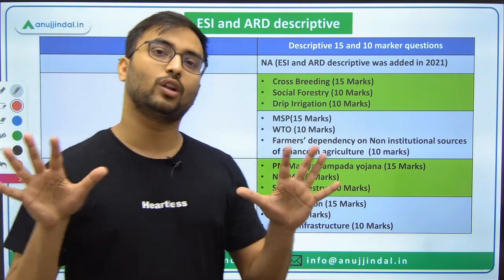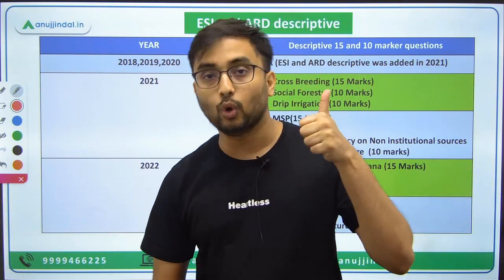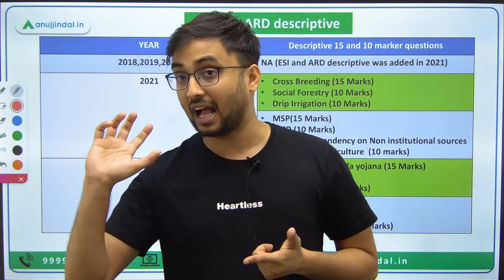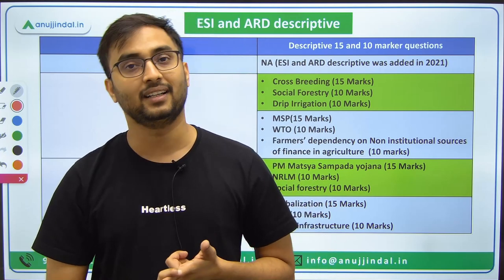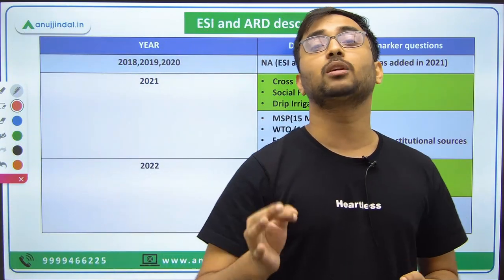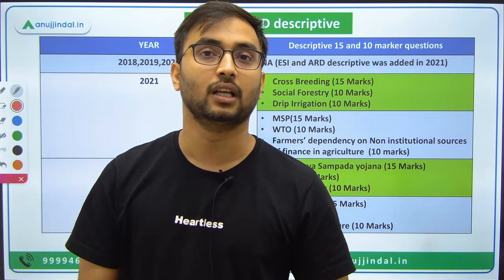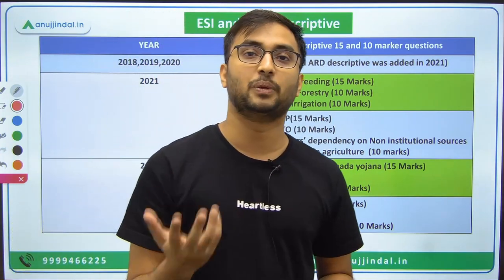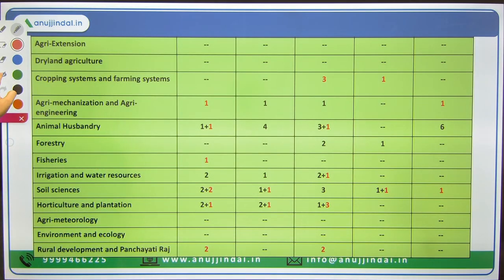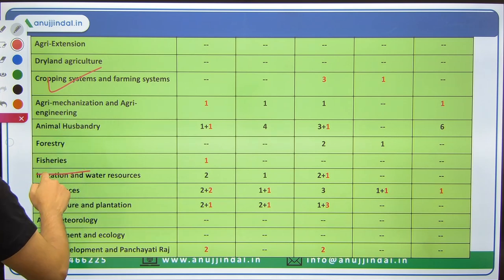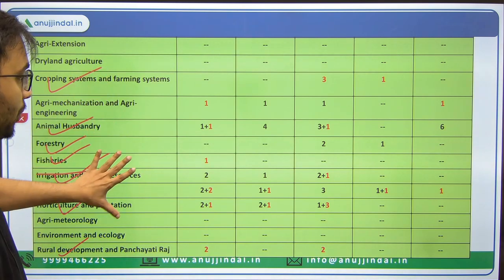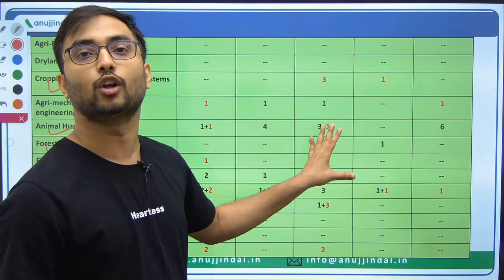Overall analysis of ESI and ARD MCQs: no direct questions — only passage-based questions with moderate to higher difficulty concepts, and data and statistics are also asked in depth. For example, floor spacing for swine was asked as a specific detail. The shortcut is: don't cover all topics, cover only the important ones — Cropping systems, Farming systems, Animal husbandry, Forestry, Fisheries, Irrigation, Water resources, Soil science, and Horticulture — from which detailed questions can be expected.